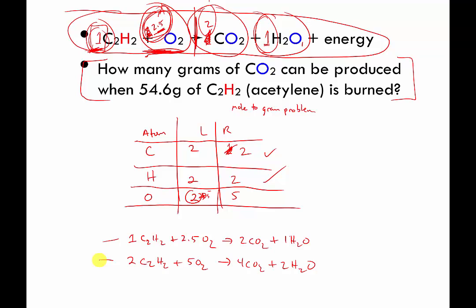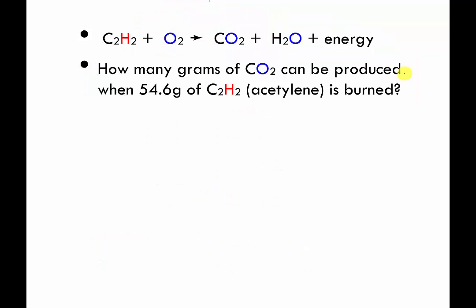So you can write 1C2H2 plus 2.5O2 makes 2CO2 plus 1H2O. Or you can say 2C2H2 plus 5O2 makes 4CO2 plus 2H2O. Either equation is correct — they're both balanced. So whatever makes you happier. Now let's go on to the actual problem.